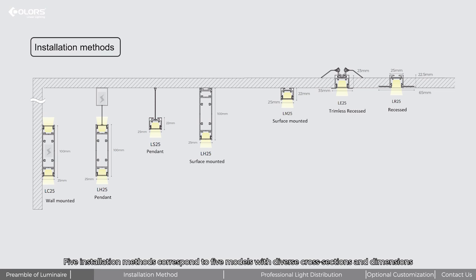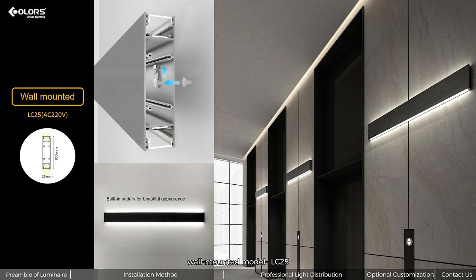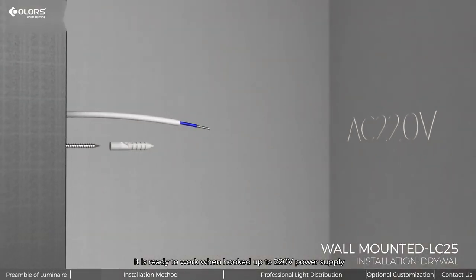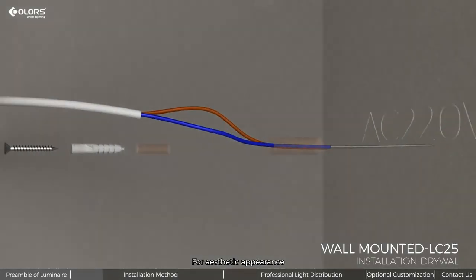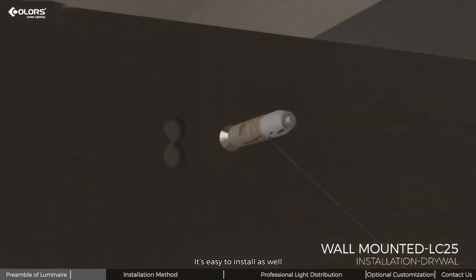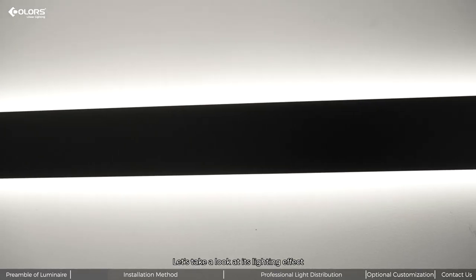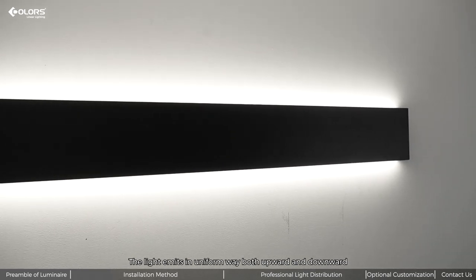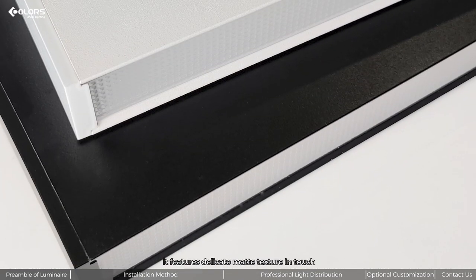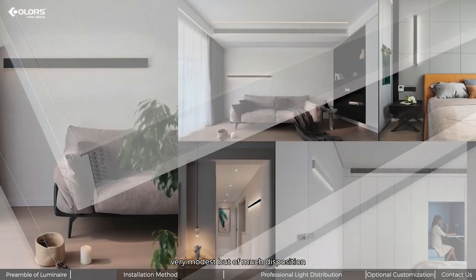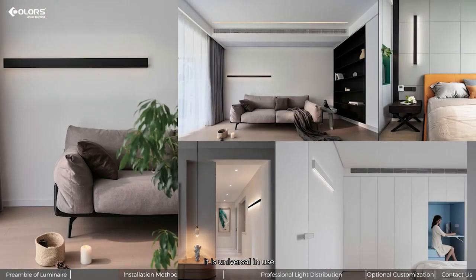Five installation methods correspond to five models with diverse cross-sections and dimensions. First, wall-mounted model LC25 is ready to work when hooked up to 220-volt power supply. For aesthetic appearance, we adapt a built-in driver. It's easy to install as well, just hanging with a nail, similar to suspended clocks. Let's take a look at this lighting effect. The light emitting in different ways goes upward and downward with surface processed. It features that it can match texture and touch. The parameterized launch disposition, as cases are tested, is universally infused.